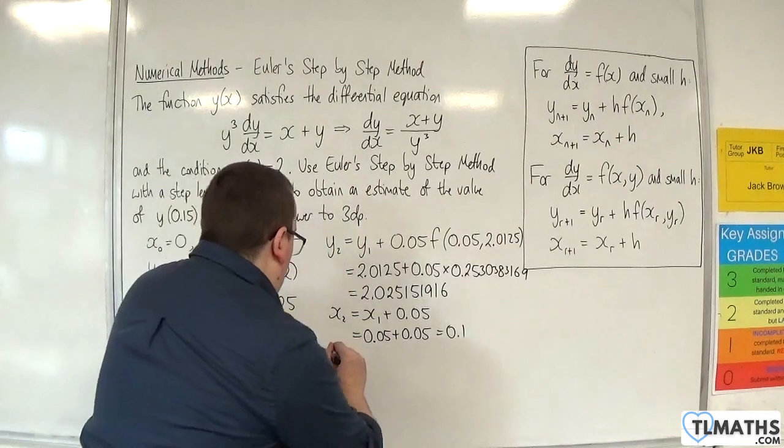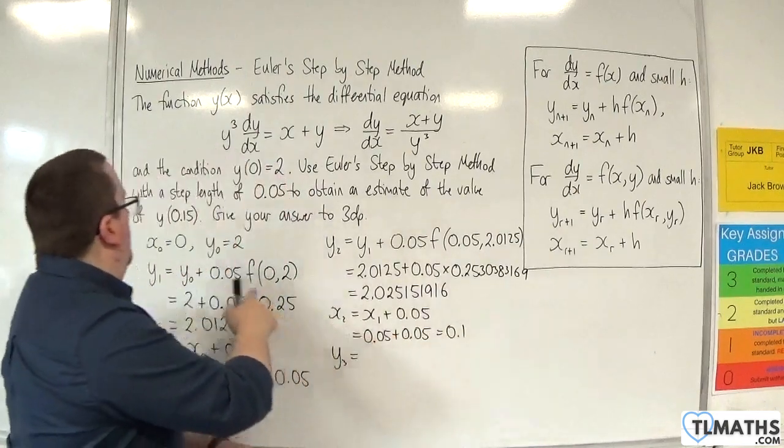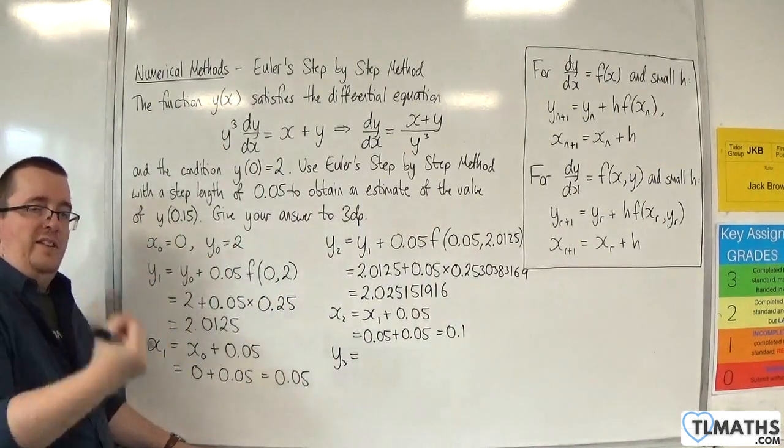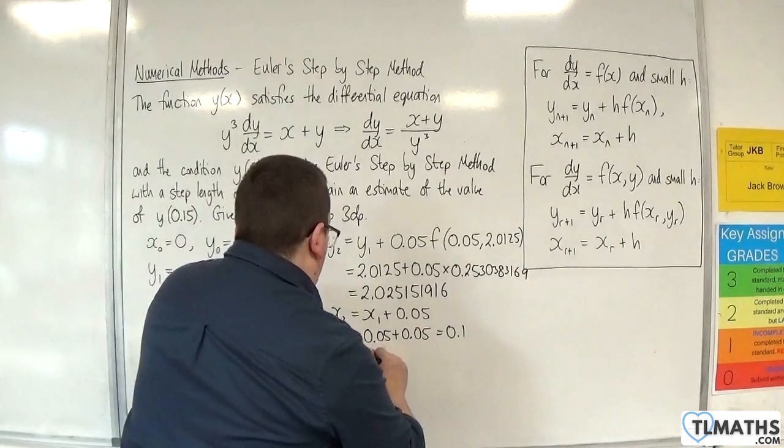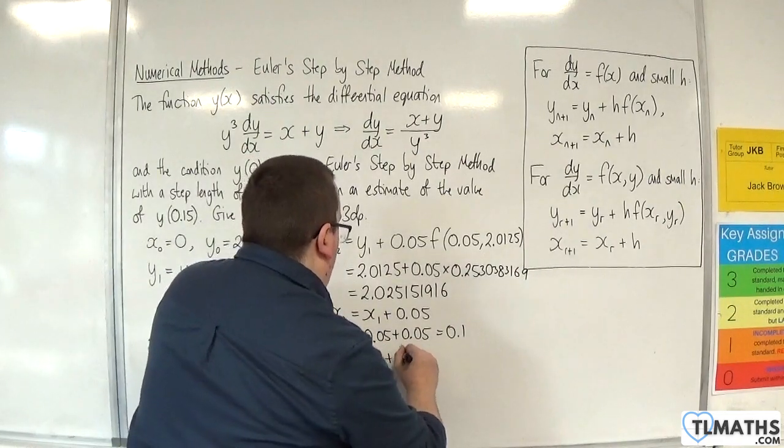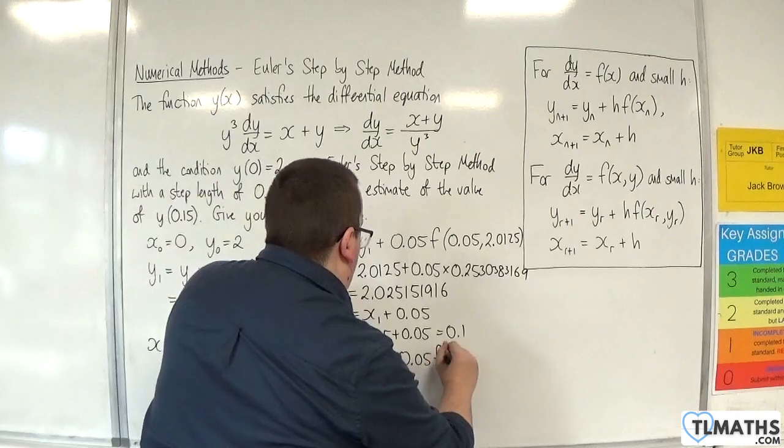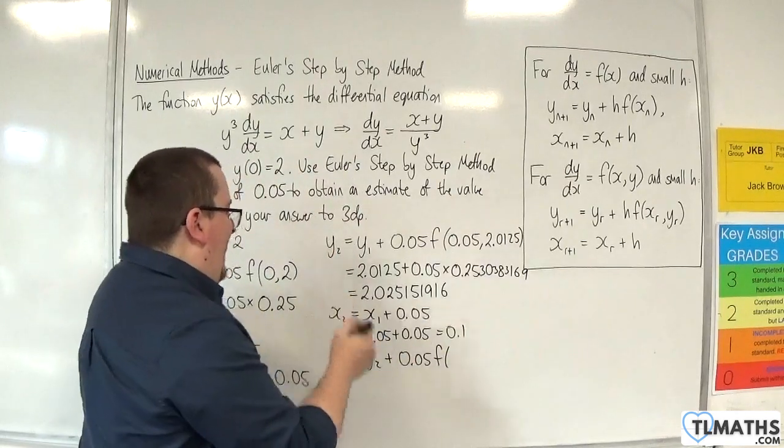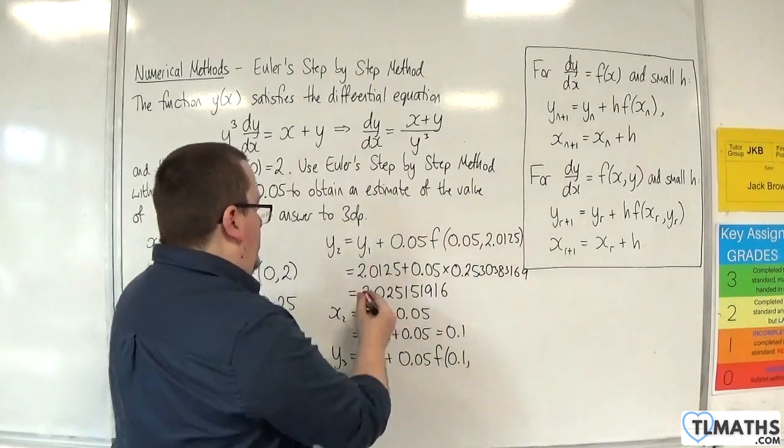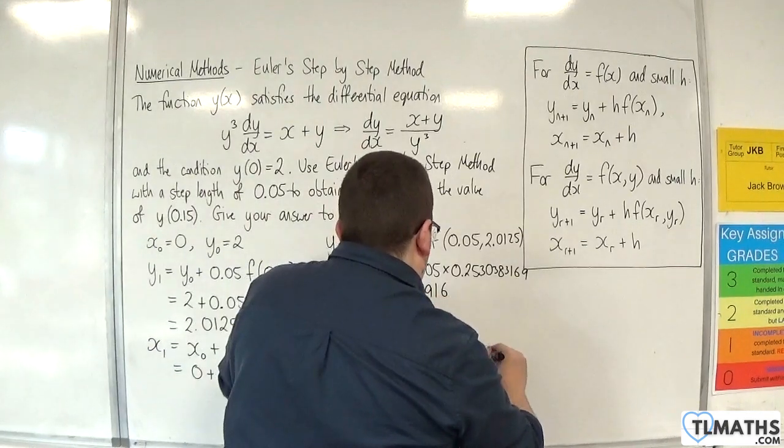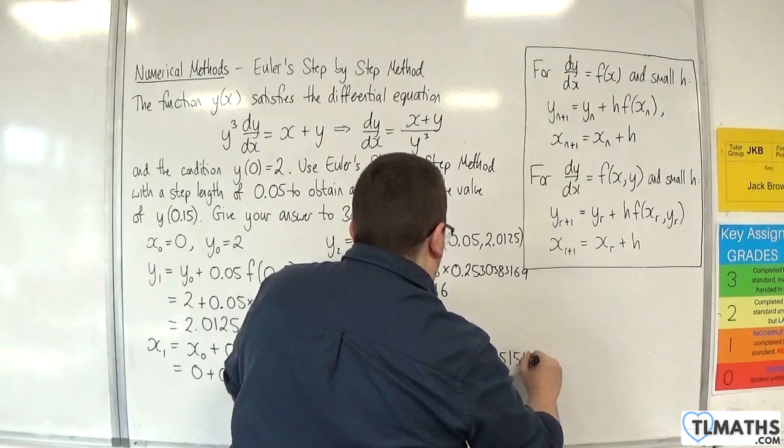Okay, so we now need y₃, because that's not quite right. We need to get to 0.15, so we need to go one more stage. So y₃ is y₂ plus the step length 0.05, times f(x₂, y₂), which is 0.1, and y₂ which is this 2.025151916.